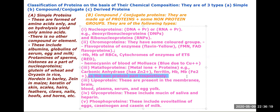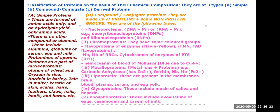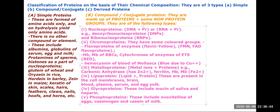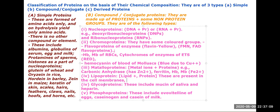Next is lipoprotein — lipid plus protein. These are present in cell membranes, brain, blood plasma, and serum. Egg yolk is also a phospholipid. Lipoproteins are essentially present in cell membranes.